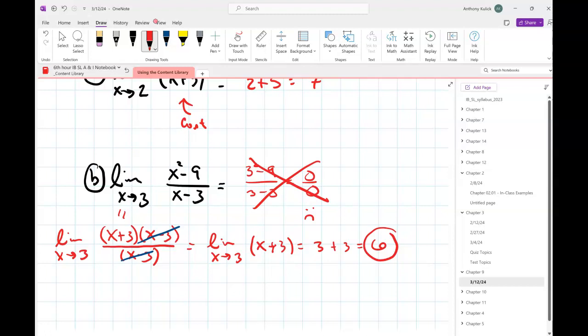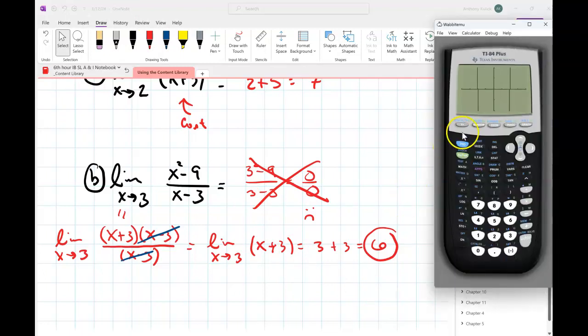Now if I look at x plus 3, is that continuous everywhere? Right. So now I can do my direct substitution, and there's my answer. Mr. Kulik, what if I'm stuck and I don't know algebraically what to do? Well, here's my suggestion to you. Let's graph x squared minus nine over x minus three, and we'll just do our standard window or whatever.